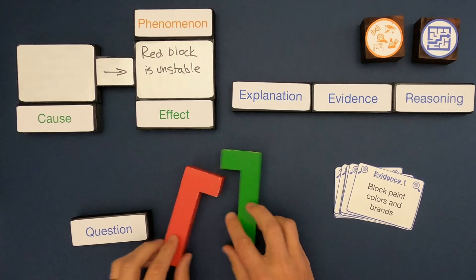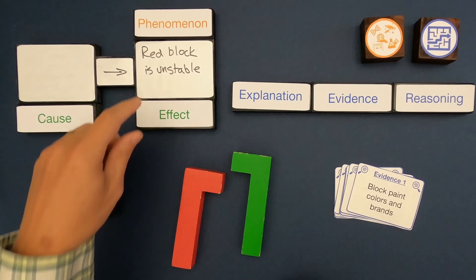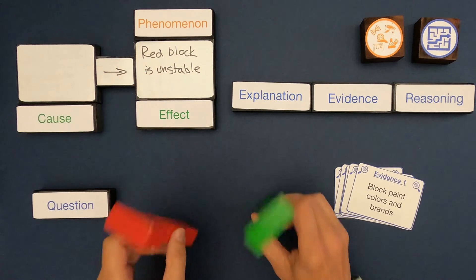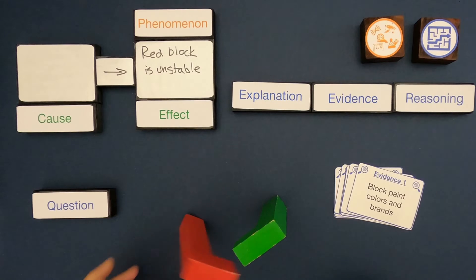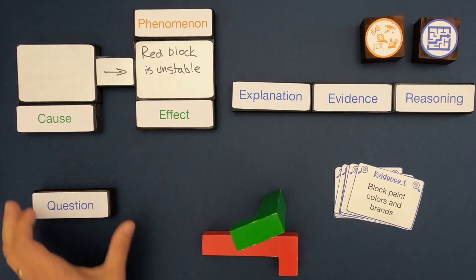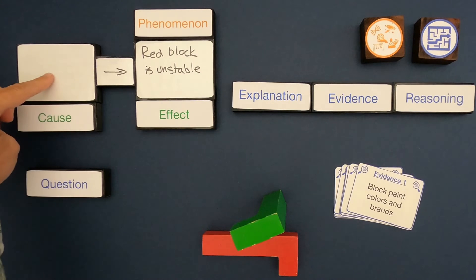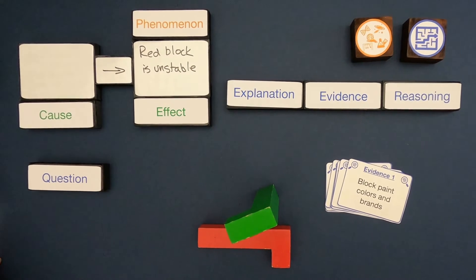The phenomenon that we're trying to figure out is we've got a red block that's unstable. The green is able to just stand there, but I let go of the red and it falls down. We're trying to figure out what causes it to be unstable.